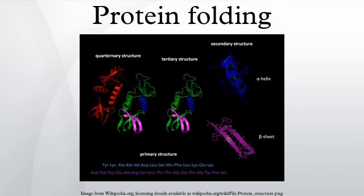Protein folding is routinely studied using NMR spectroscopy, for example by monitoring hydrogen-deuterium exchange of backbone amide protons of proteins in their native state, which provides both the residue-specific stability and overall stability of proteins.